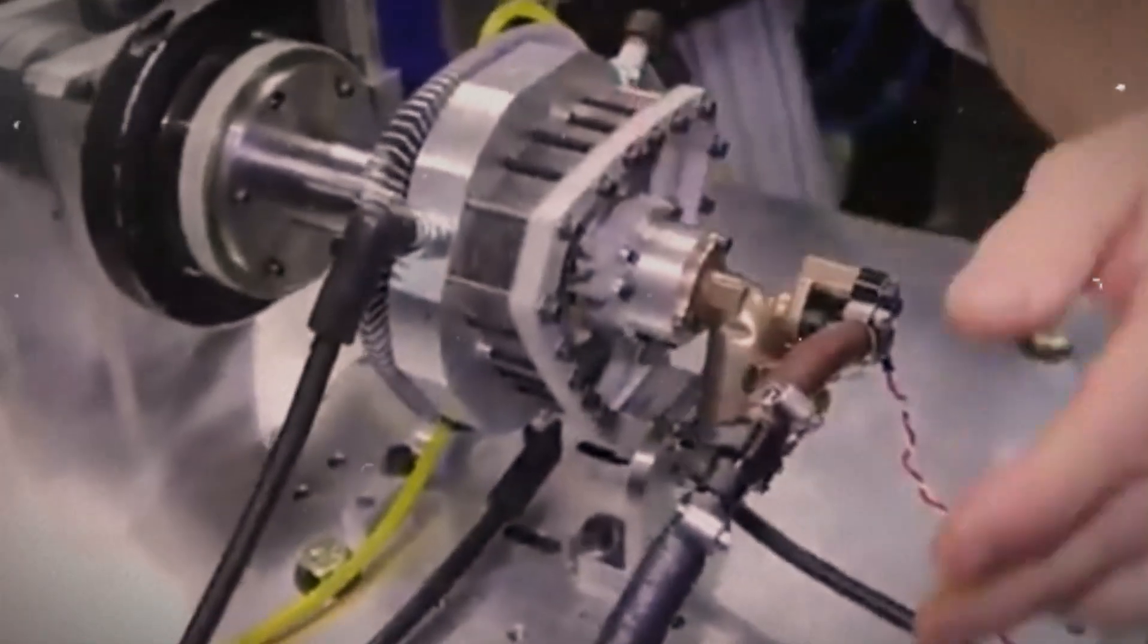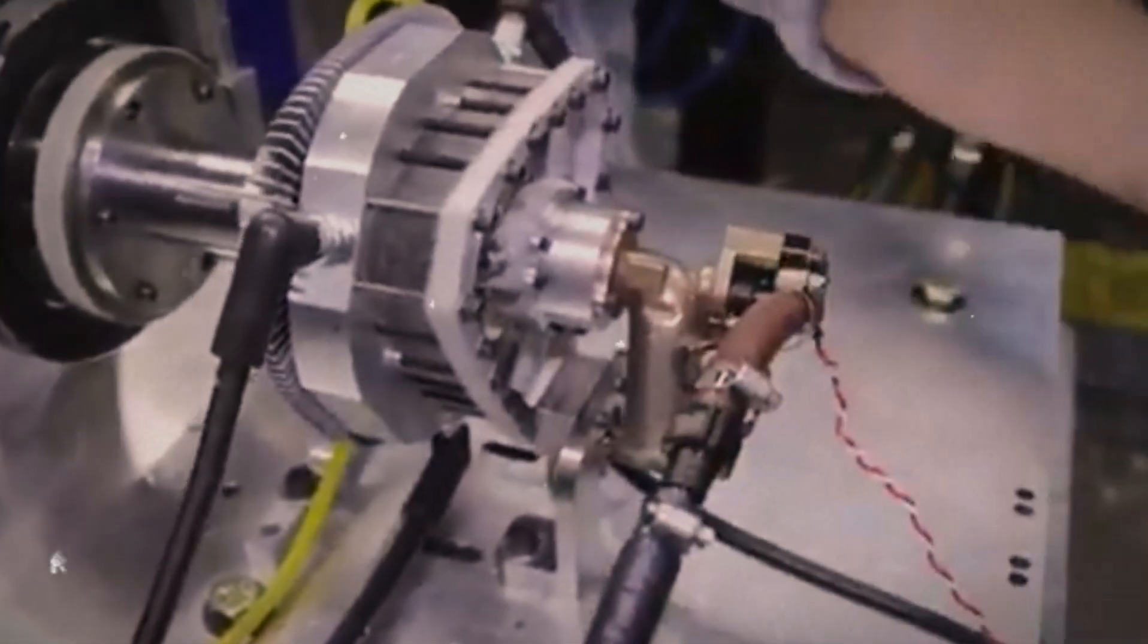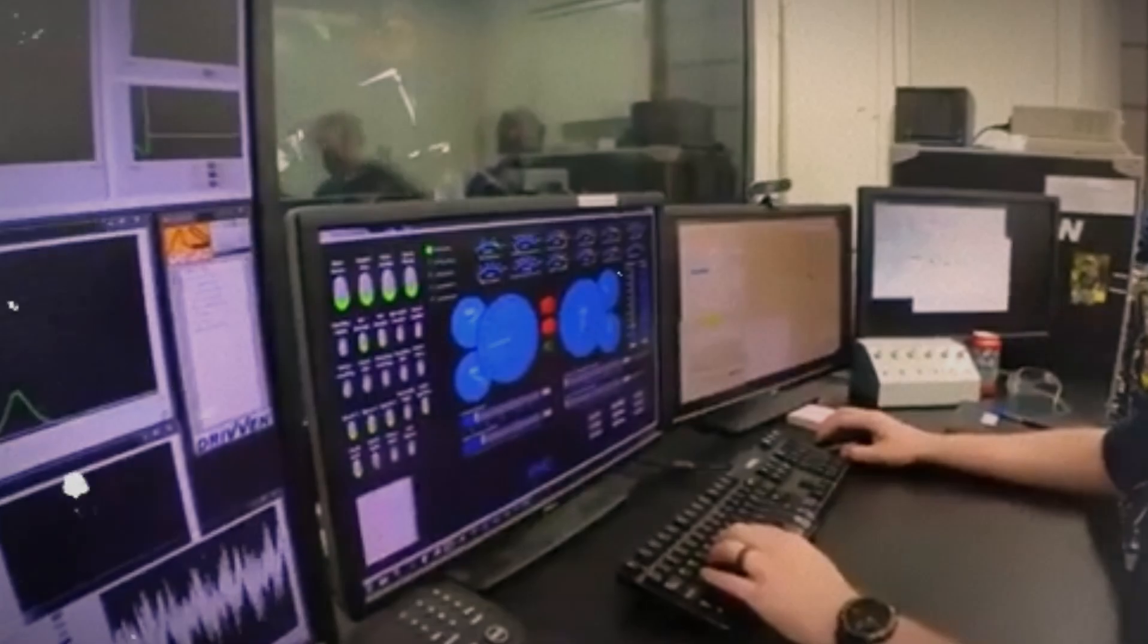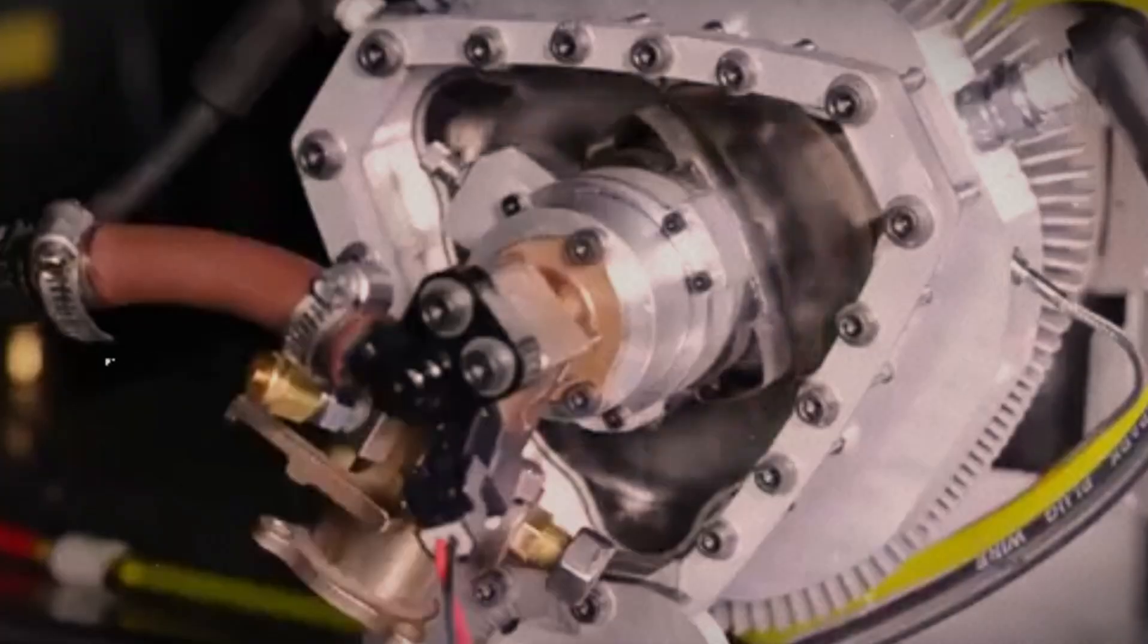A team of experts at Aston Aerospace has unveiled the Omega-1 engine, a revolutionary machine that operates without the familiar components of cylinders and pistons. How does it work?